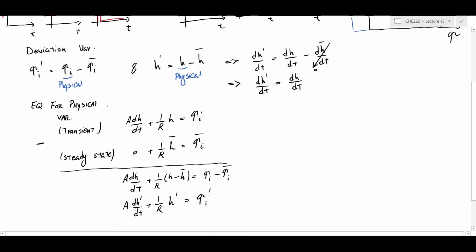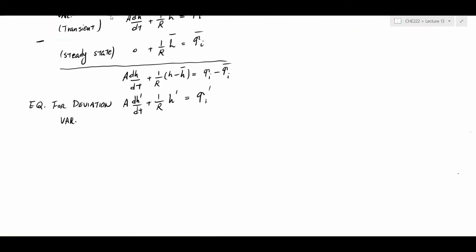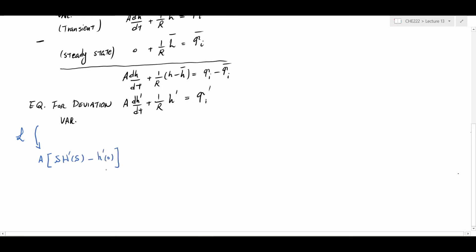So effectively, we obtain a new equation, but this time for the deviation variable. From this point on, we follow the normal Laplace transform procedure and take the Laplace transform of the whole equation. I remind you that the prime here does not mean derivative with respect to time — instead, it denotes that it's a deviation variable.